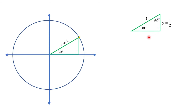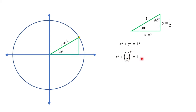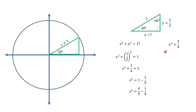Now let us try to get the x distance. Since we're dealing with a right triangle, we can use the Pythagorean theorem: the sum of the squares of the two legs is equal to the square of the hypotenuse. We already know the value of y, so by substitution, that would be x² + (1/2)² = 1. Simplifying, that would be x² + 1/4 = 1. Transposing 1/4 to the right side, that would be 1 − 1/4. Therefore, x² = 3/4. To get the value of x, we take the square root of both sides, which gives us x = √3/2.